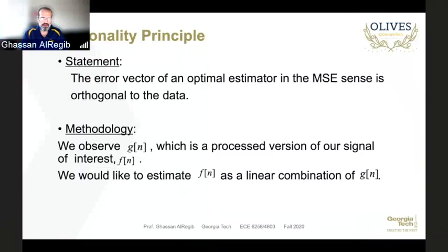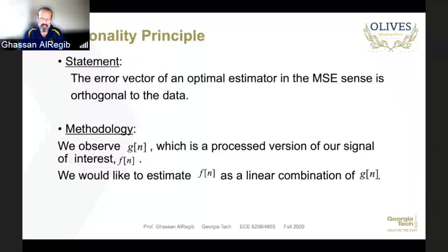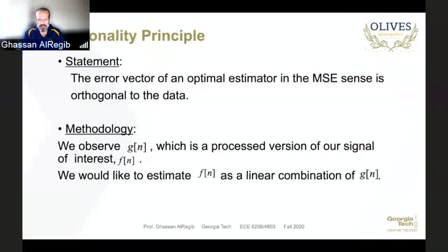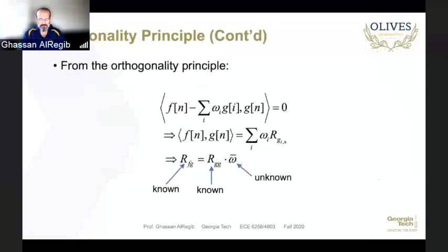then the error vector is orthogonal to the data or the observation g, which has both the noise and the signal. To set up the problem: we have a signal g(n) as our observation, it has the noise, and the original signal before the noise is called f(n). We would like to estimate f by some kind of linear combination of g(n).